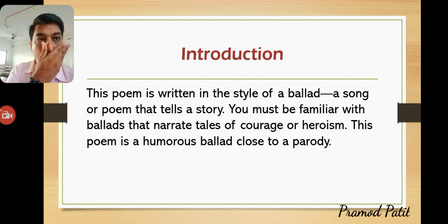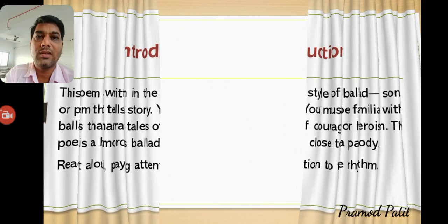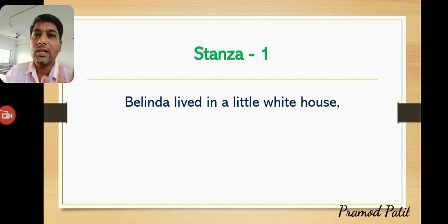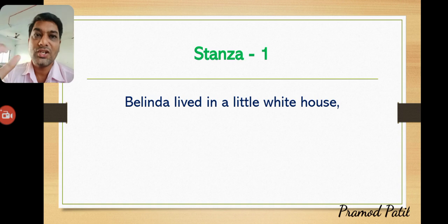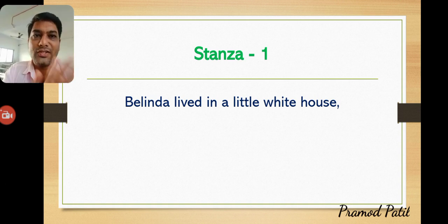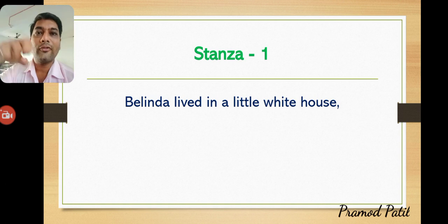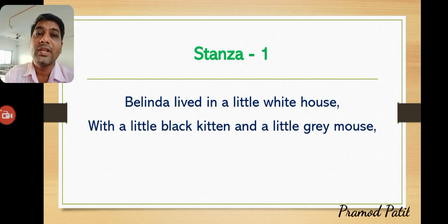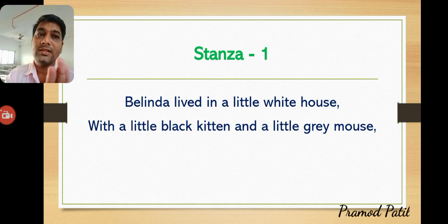The first stanza tells us: 'Belinda lived in a little white house.' The white house here represents the main, important place — like a capital — where the principal person lives. Belinda represents the president or the highest class, the owner of all the animals. She keeps some animals as pets: the first is a little black kitten, and the second is a little gray mouse.